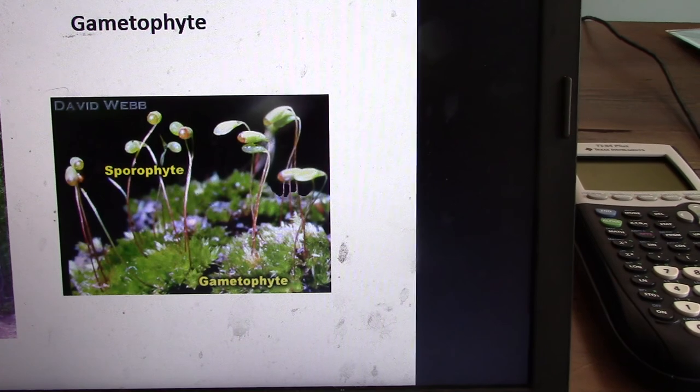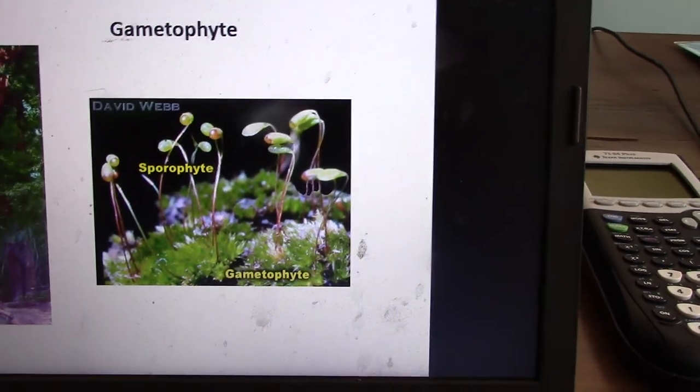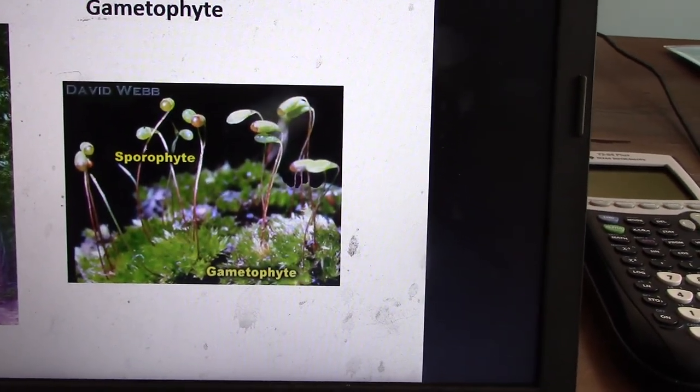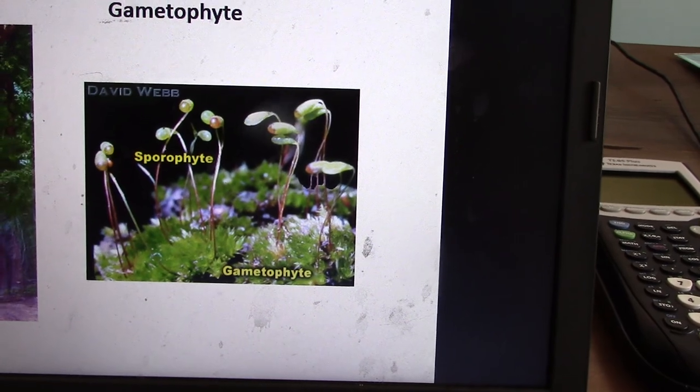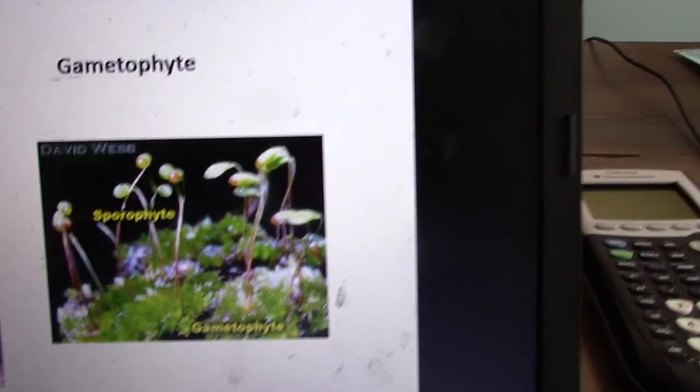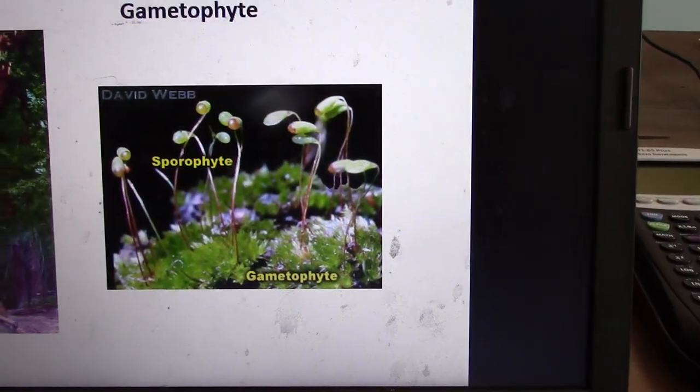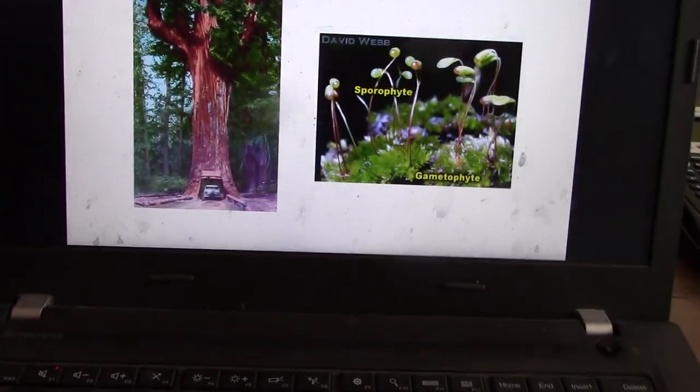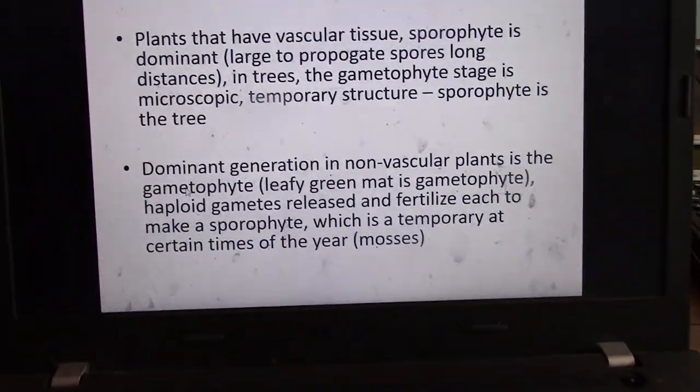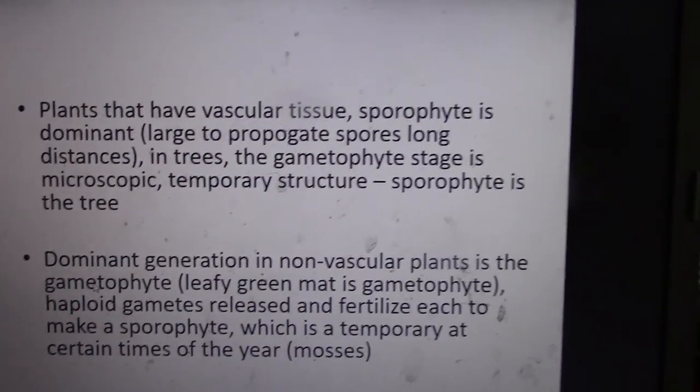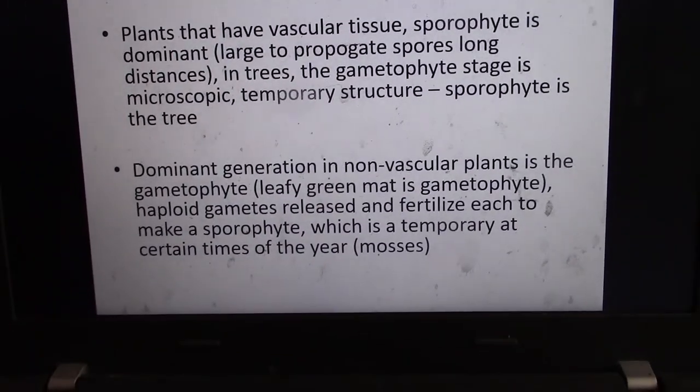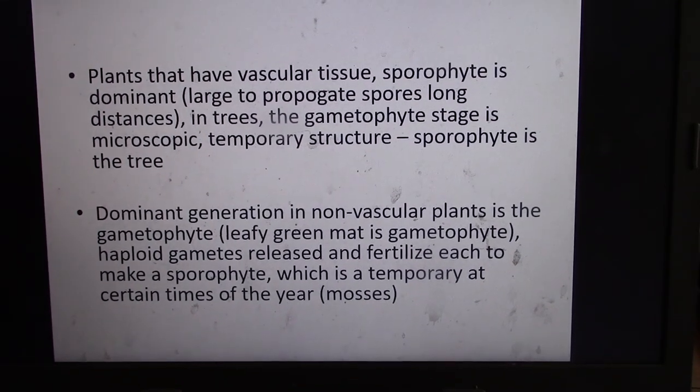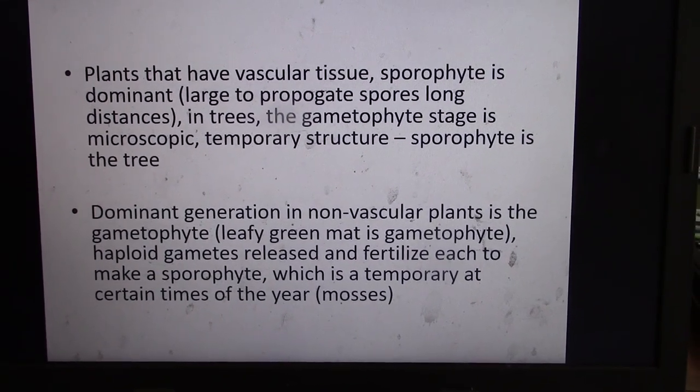So the gametophyte is really small. So mats of moss or lichens and stuff like that, they'll spread out across the bottom of a forest. And the sporophyte, this is sphagnum moss. This sporophyte will be these little propagations up top. Plants that have vascular tissue, the sporophyte is dominant. And the dominant generation in non-vascular plants is a gametophyte.